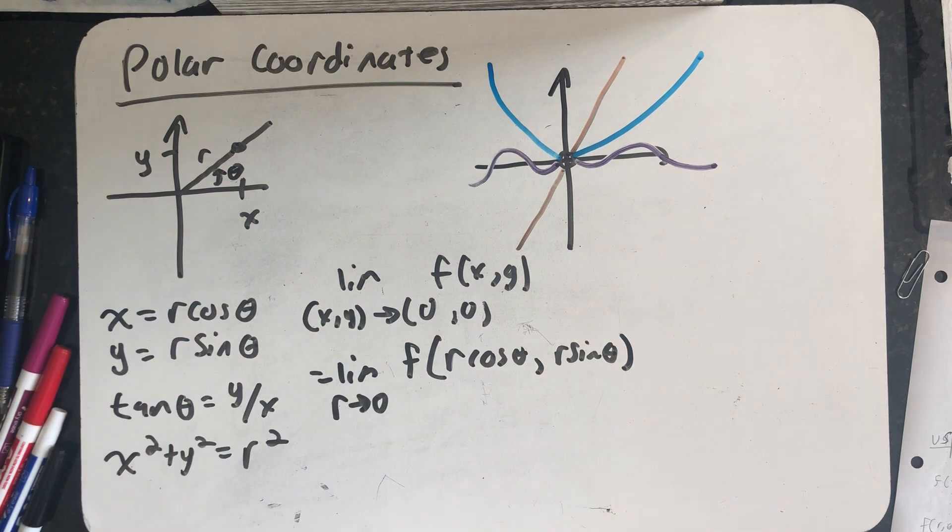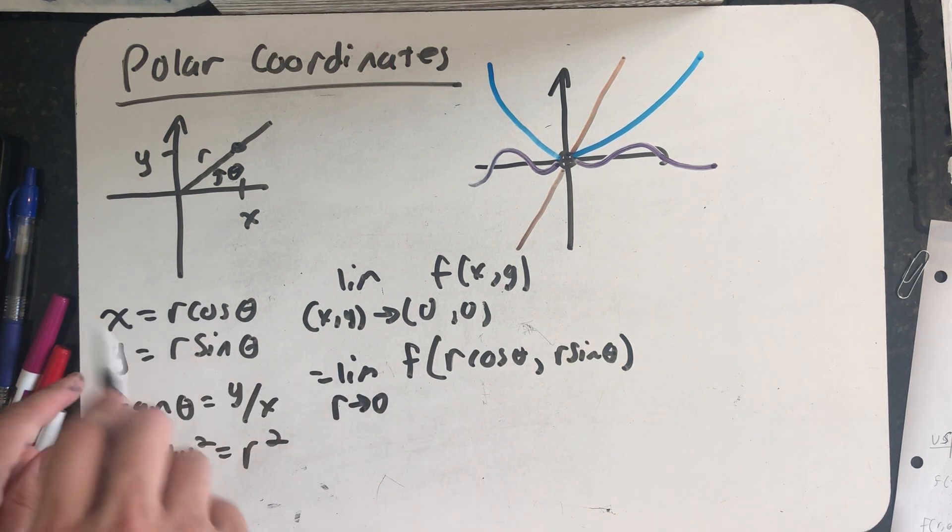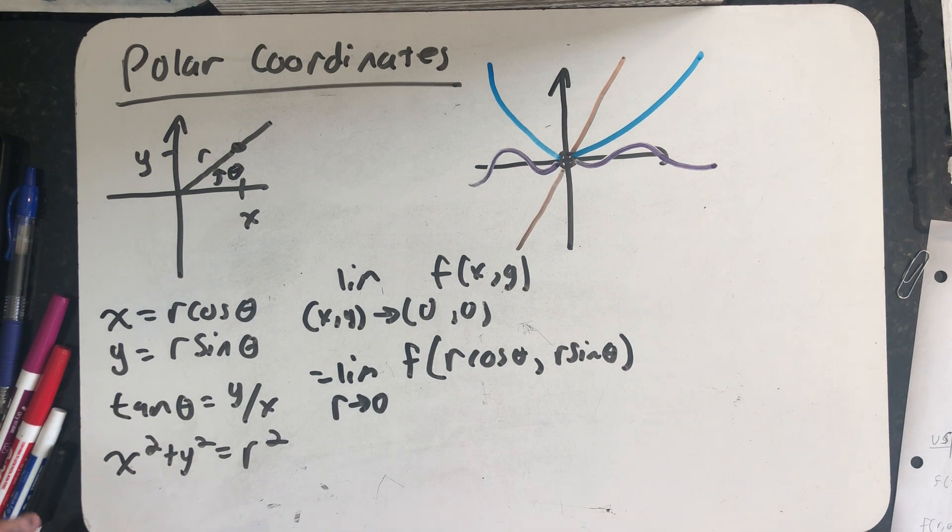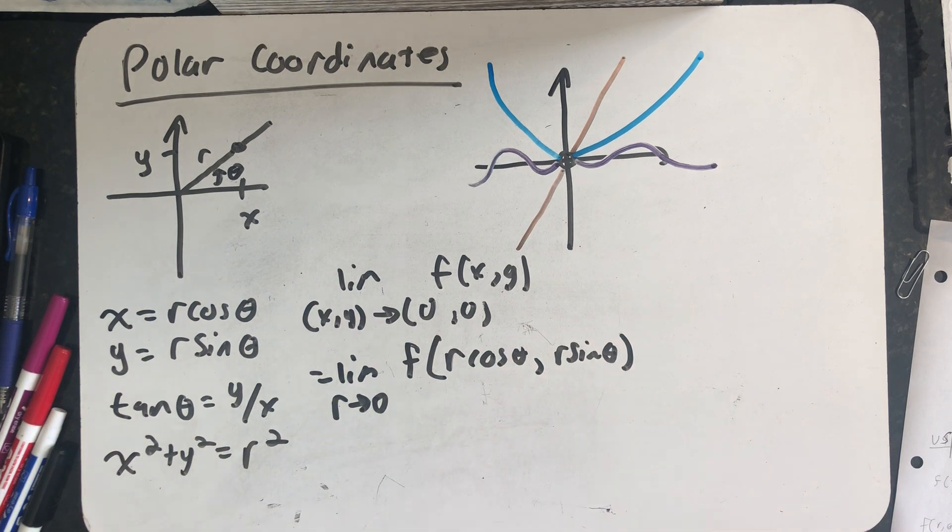And when I write this down, I'm thinking about replacing x with r cosine theta and substituting r sine theta for y. In reality, I can use any of these formulas anytime I want to rewrite the expression for f in terms of r's and thetas. So let's do an example.